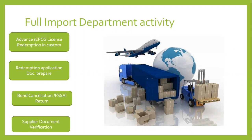Import करने के लिए जैसे आपकी shipment आ गई — shipment आने से पहले हमें license apply करना होगा। जैसे आप एक machine मंगवा रहे हो, import कर रहे हो, जिसमें manufacturing होगी और जो product बनेगा वो आप export करोगे। तो इस machine को import करने से पहले एक license लेना होगा जिसे ePCG license कहते हैं। इसके लिए आप DGFT से required documents submit करके license ले सकते हो। उसी तरह raw material के लिए advance license ले सकते हो।